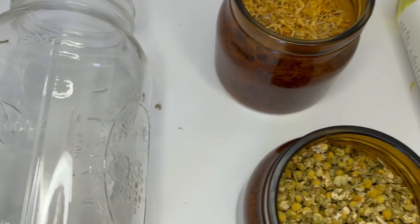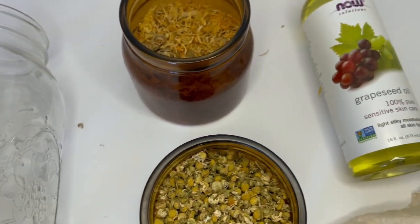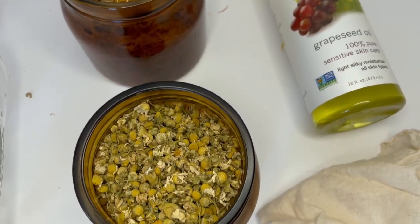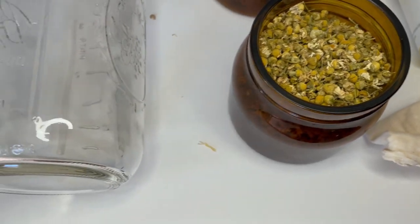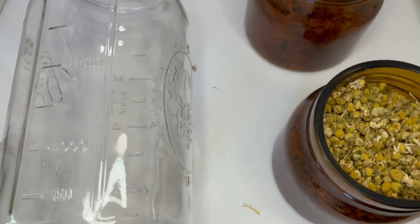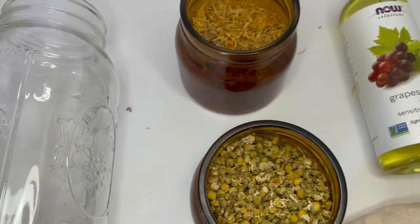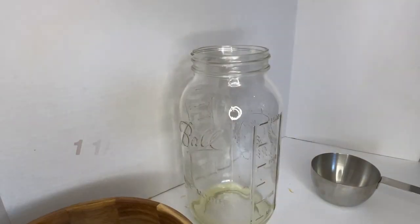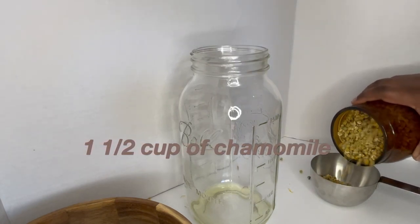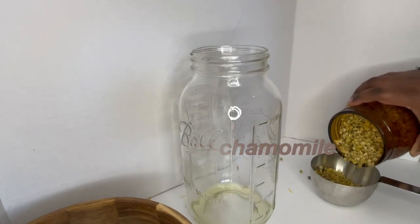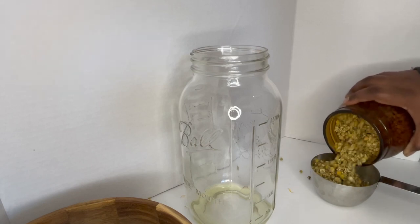For this tutorial, you're going to need a mason jar, chamomile herb, calendula herb, grapeseed oil, and cheesecloth. You can use a standard size mason jar. We're going to use a cup and a half of dry chamomile herb, and I'll link everything in the description.